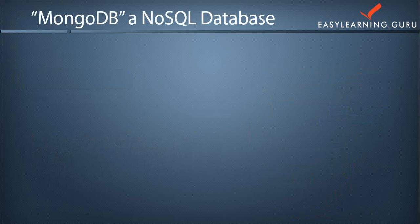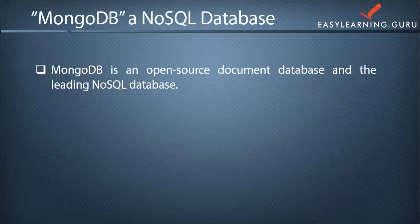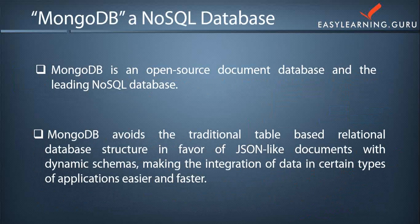MongoDB is a NoSQL database. As we know, MongoDB is a type of document store NoSQL database. MongoDB is basically an open source document database with a leading NoSQL data model. MongoDB avoids the traditional table-based relational database structure in favor of JSON-like documents with dynamic schemas, which makes the integration of data in certain types of applications easier and faster.